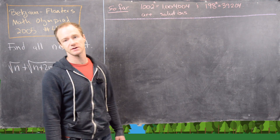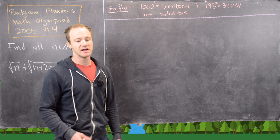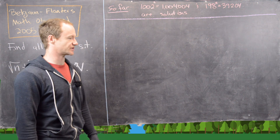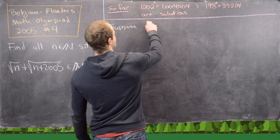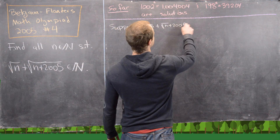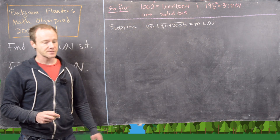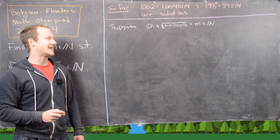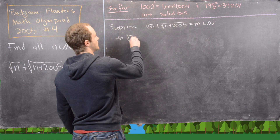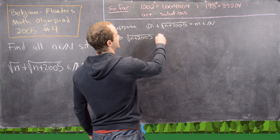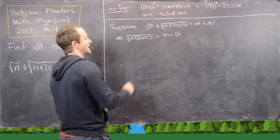So we've found two solutions: n = 1,004,004 (which is 1002²) and n = 39,204 (which is 198²). Now we want to prove those are the only solutions. Suppose √n + √(n + 2005) = m, where m is a natural number, and we'll solve for n in terms of m.